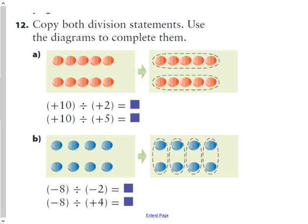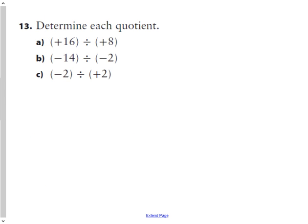Question 12, we'll skip this one. I don't like it. And we said we would just determine each quotient for 13. Same rules as before. How many 8s in 16? 16 divided by 8 is 2. Same signs, positive quotient. 14 divided by 2 is 7. Same signs, positive quotient. And 2 divided by 2 is 1. Different signs, negative quotient.